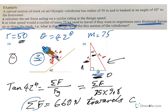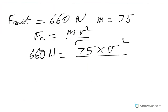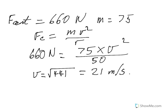So 660 Newton equals mass 75 times the velocity squared that we're after, over the radius. Let's go back to the radius, there it is, 50 metres. So over 50. And then when we rearranged that, we get that v would be the square root of 441, which is 21 metres per second.